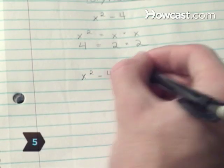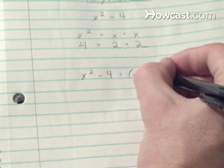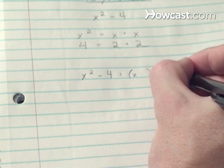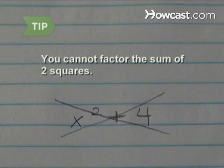Step 5: To factor the difference of two squares, draw two sets of parentheses. On the left side of each set of parentheses, split the first square, x squared, into two x's. Since this is a difference of squares, it only works out when one term is being subtracted from another. You cannot factor the sum of two squares.